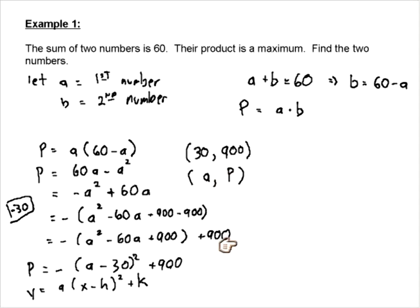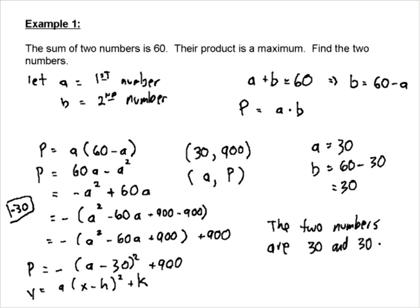So all we've done is we've changed these variables. Instead of being Y it's a P, so instead of being Y it's a P, and instead of being X it's an A. So that tells us that the maximum is going to occur when A is equal to 30 and the maximum product is going to be 900. So we need to go back and answer the question though, because the question asks us what are the two numbers? So we know that A equals 30, and B is going to have to equal 60 minus 30, which of course is going to be 30 as well. So the two numbers are 30 and 30. Just like that.